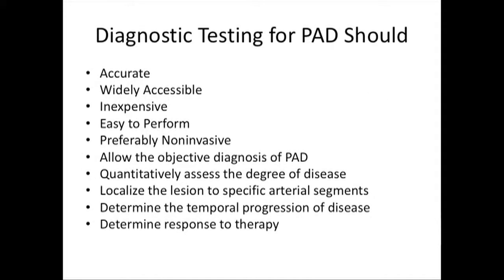The TASC recommendations state that PAD diagnostic testing should be accurate, widely accessible, inexpensive, and easy to perform — preferably non-invasive. Although we have a definite role for angiography, testing should be able to objectively diagnose peripheral arterial disease, quantitatively assess the degree of disease, localize the lesion to specific arterial segments, determine temporal progression of disease, and determine response to therapy.